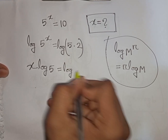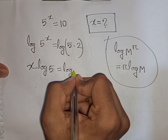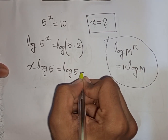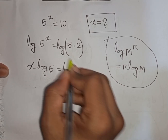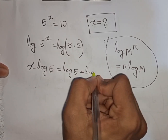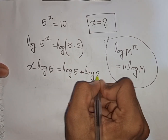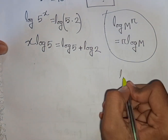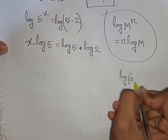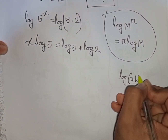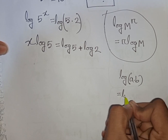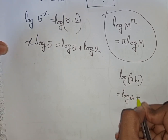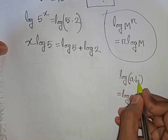That means it will be log 5 plus log 2, according to the rule: log of a times b is equal to log a plus log b.